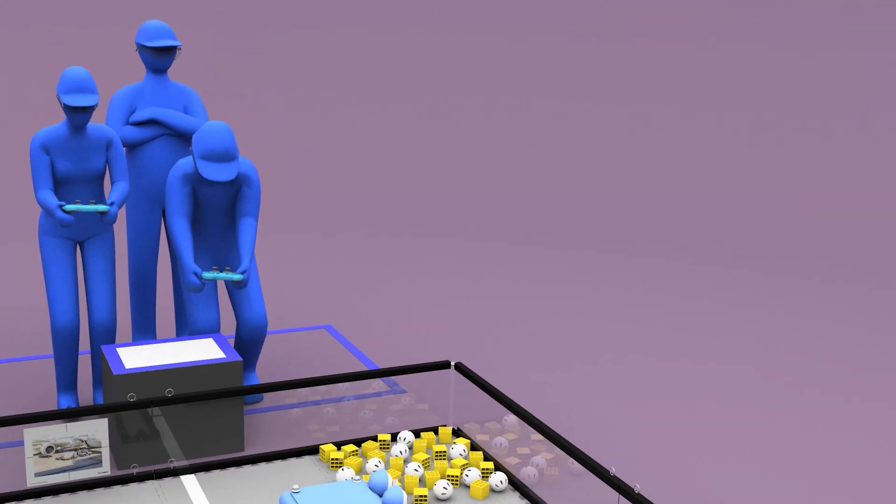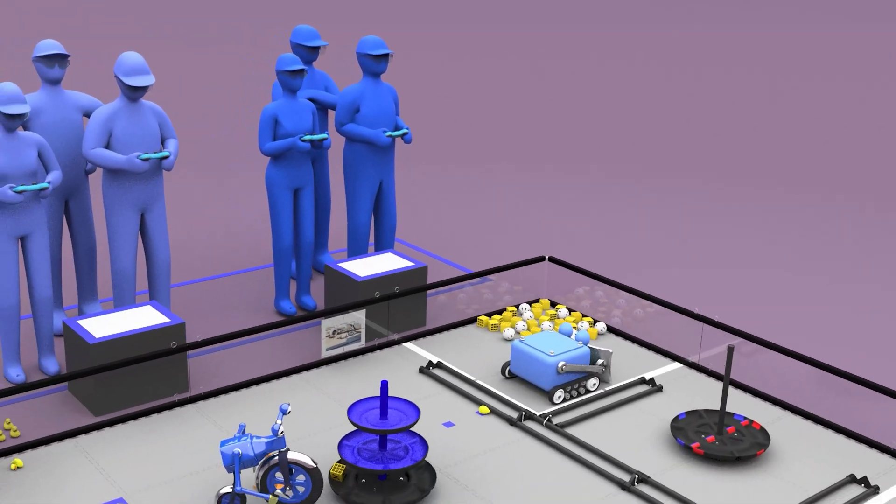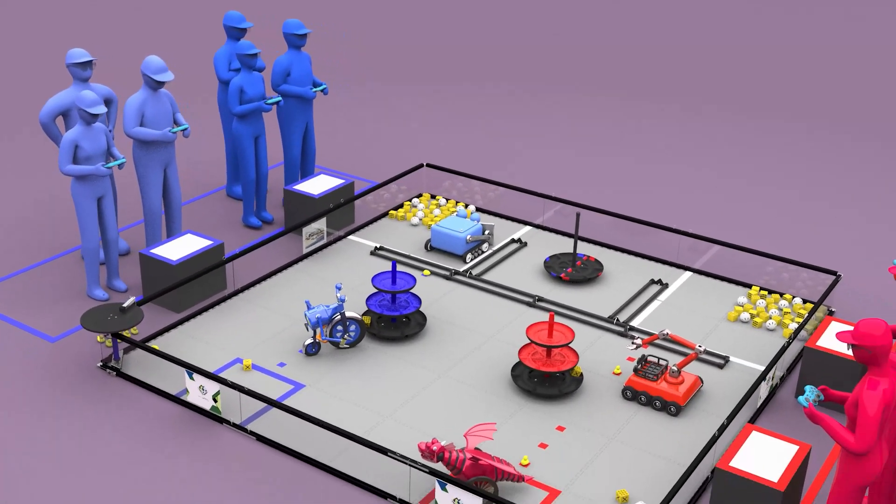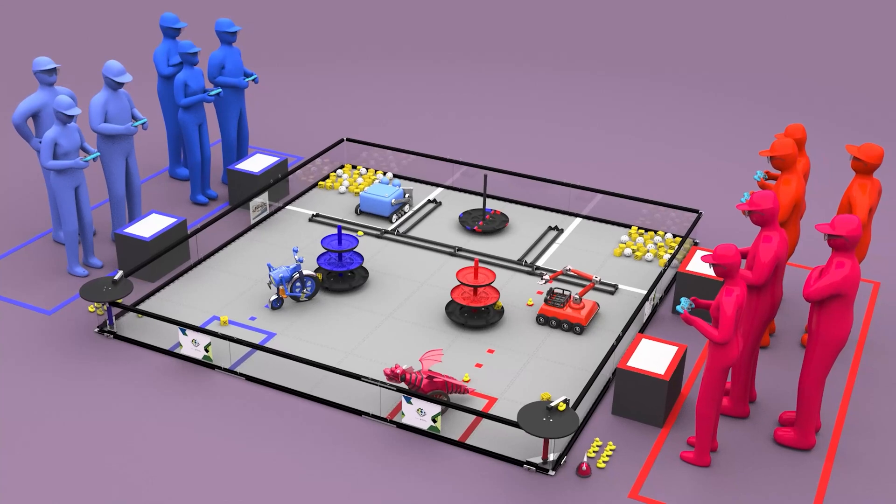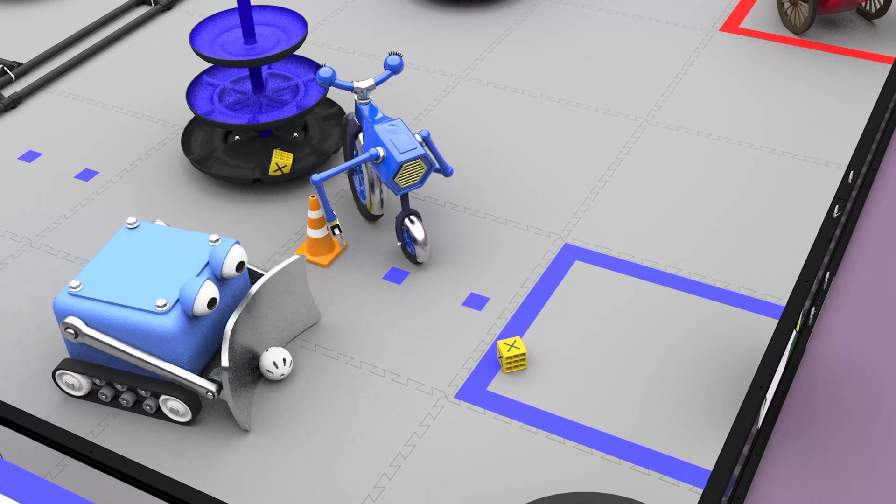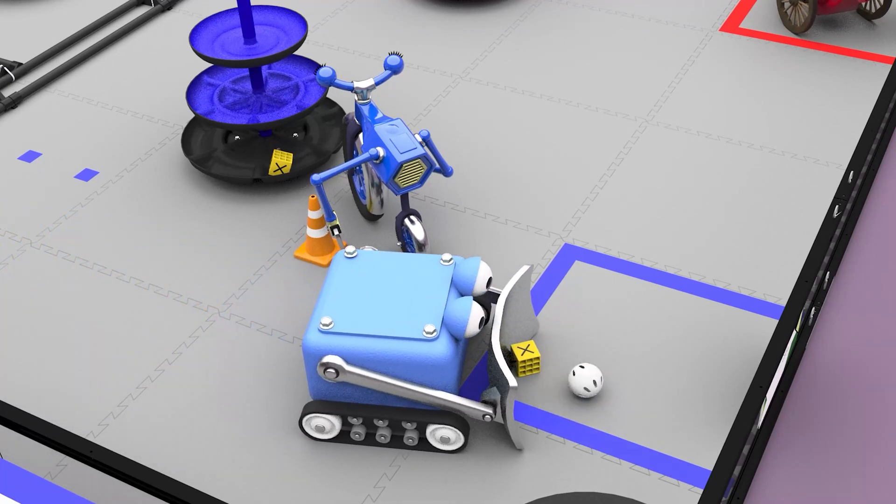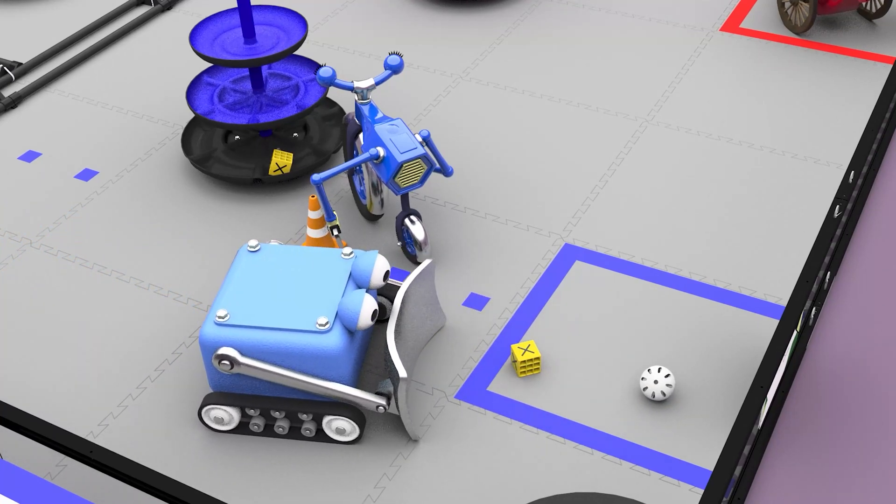Following the autonomous period is the two-minute driver-controlled period. During this time, alliances score points by delivering freight to storage units and shipping hubs. For example, each piece of freight delivered to an alliance's storage unit will earn one point.